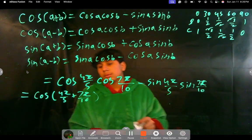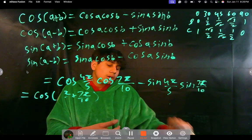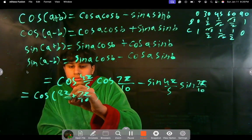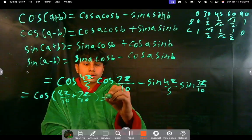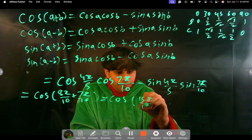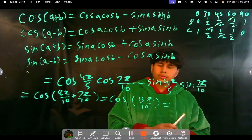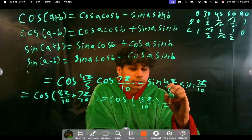What can we convert 4π/5 into? Well, we could just make it 8π/10, right? So you can add these together: cosine of, well that's 15π/10. And then you simplify that. If you divide both the numerator and denominator by 5, you get cosine of 3π/2.